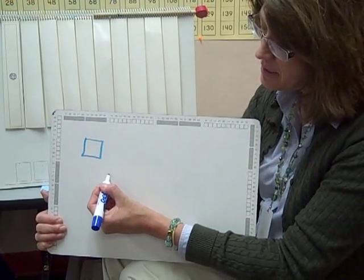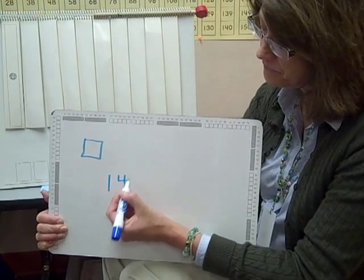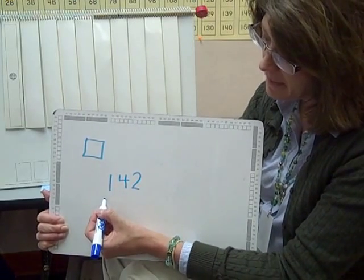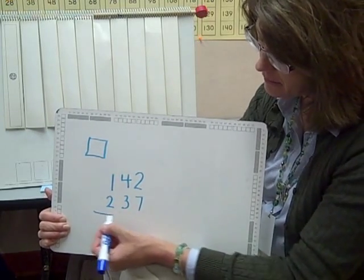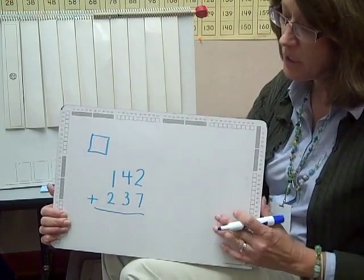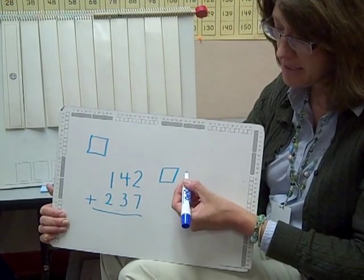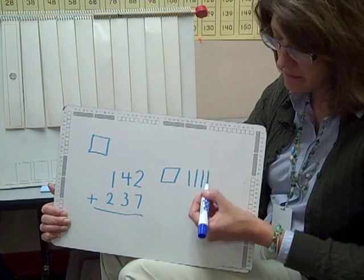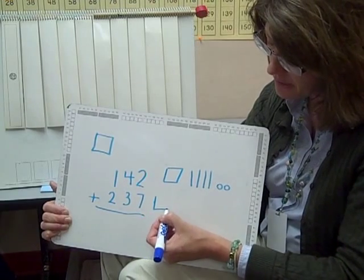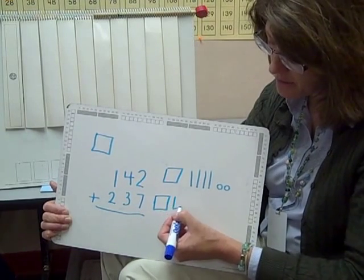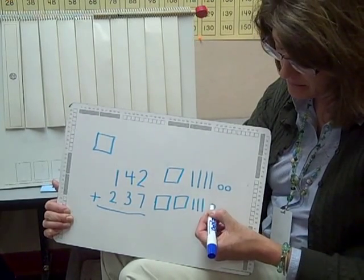An older student might be able to do a math problem in this way with a math drawing. In the older grades they may call this a proof drawing. So they would draw 100 as a box, four tens, two ones. Then they would represent 200 with two boxes, or we call those quick hundreds, three tens and seven ones.